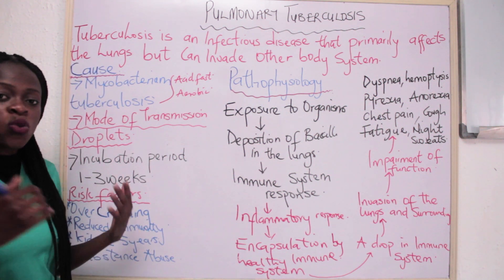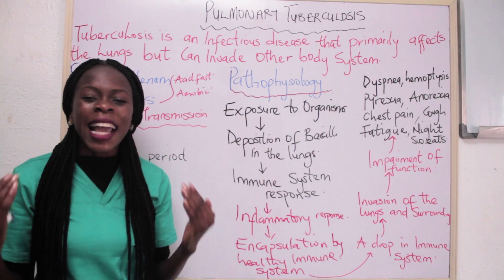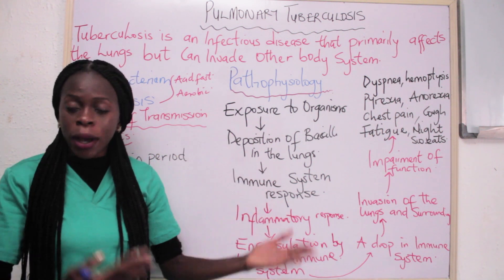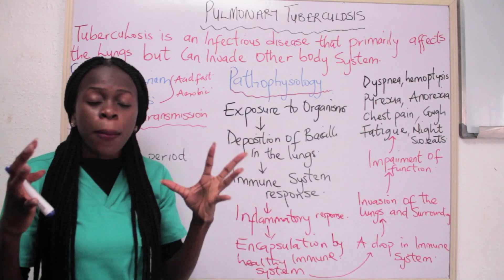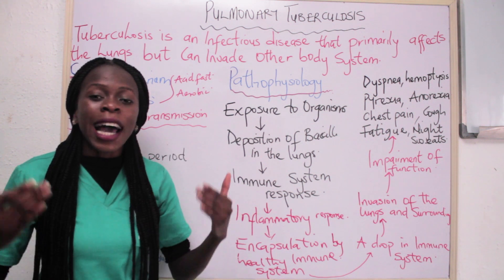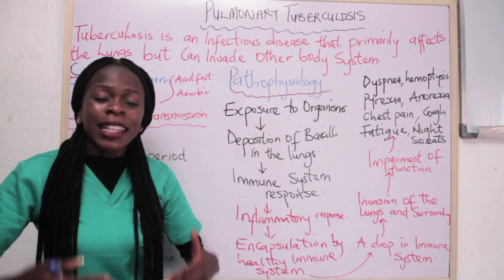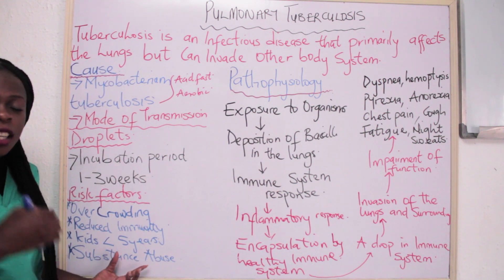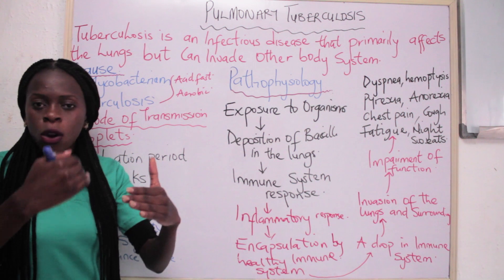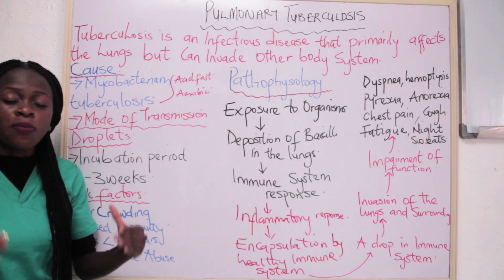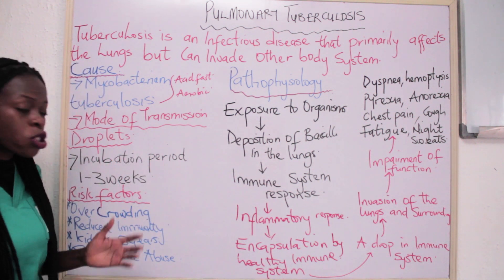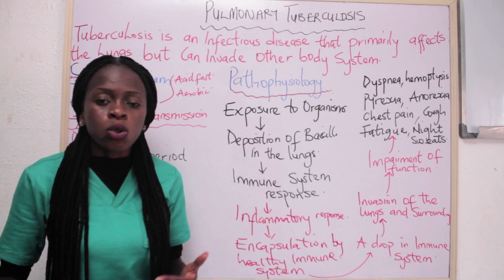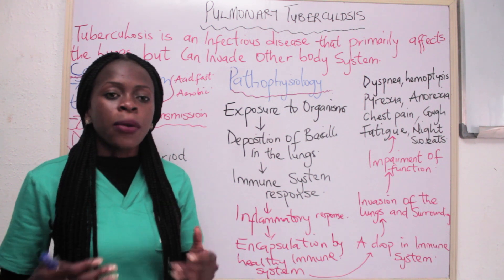Another risk factor is reduced immunity. People with reduced immunity are likely to develop pulmonary tuberculosis when they inhale Mycobacterium tuberculosis because their immune system will not be able to withstand the bacterial infection. For example, people with HIV and AIDS are predisposed to pulmonary tuberculosis. Also, children less than five years of age are at risk because their immunity is not strong enough. People who abuse drugs, especially those using IV drugs, are also predisposed.